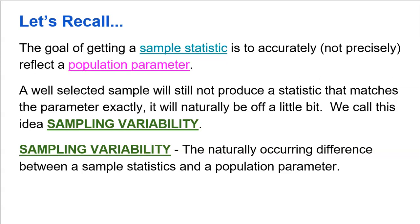Let's make sure we understand those two definitions. A statistic is a value that summarizes data from a sample, whereas a parameter is a value that summarizes data from an entire population. That's the goal — to find the population parameter. A census could get us that goal. When a census is very difficult, we need to select a sample statistic — a value that comes from a sample — to be pretty close, pretty accurate to the population parameter.